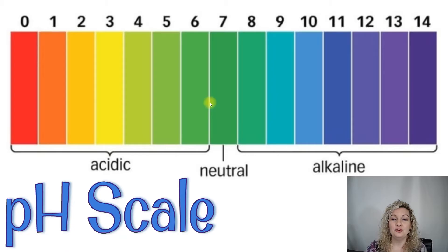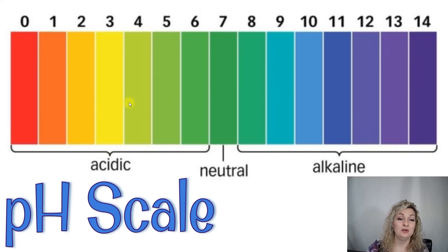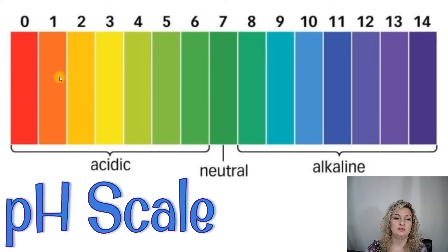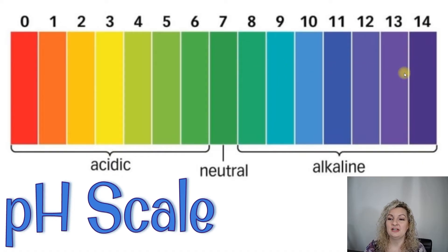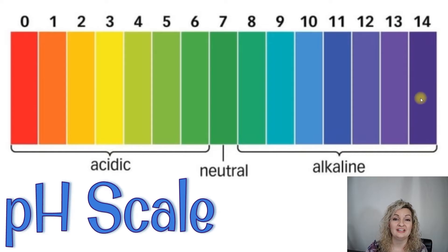Now the farther away you get from 7, the stronger it's going to become, and that can work for an acid. So our strongest acids are going to be around 0, 1, and 2 — the farthest away from 7. The same thing goes for our bases. The farther away we get from 7, the stronger it is. So 12, 13, 14 are all going to be our strongest alkaline substances.